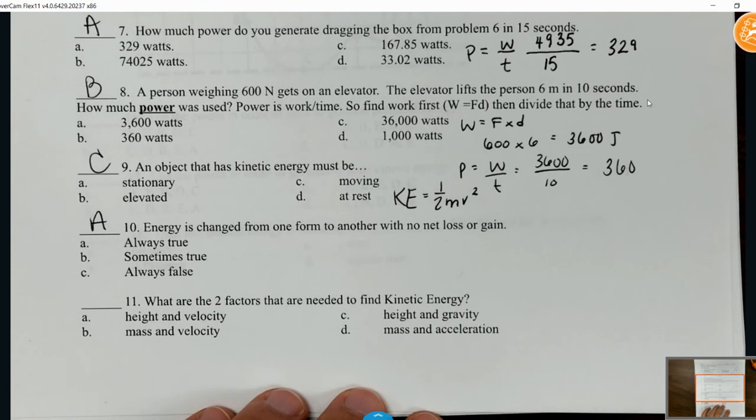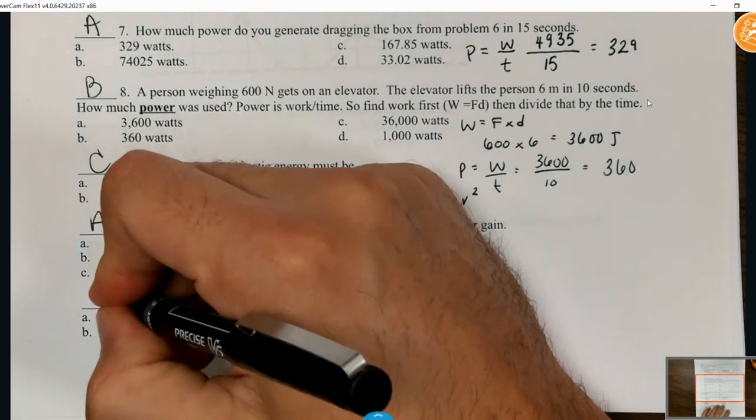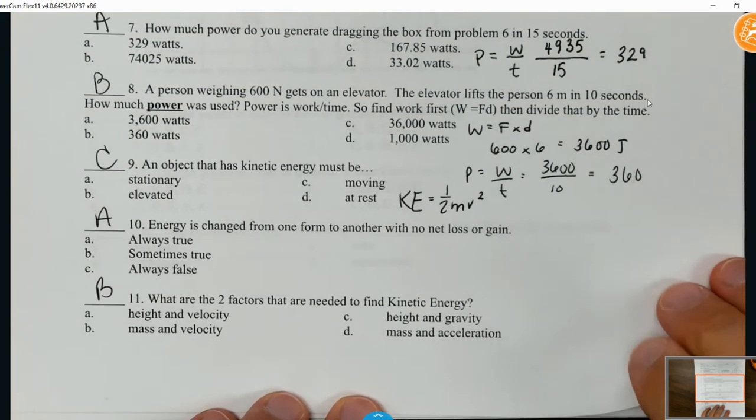What two factors are needed to find kinetic energy? Yeah, mass and velocity. You have the equation one half mv squared right there, so those are the two variables or factors that we need.